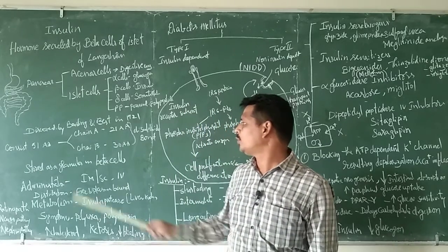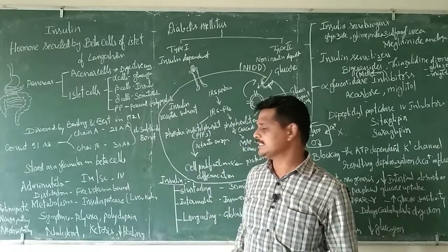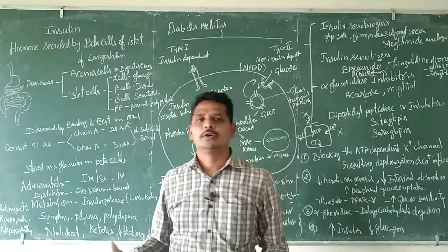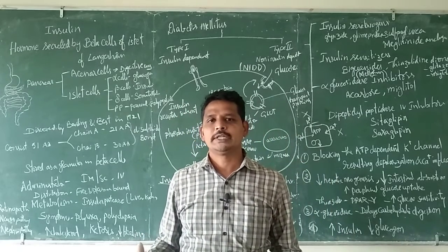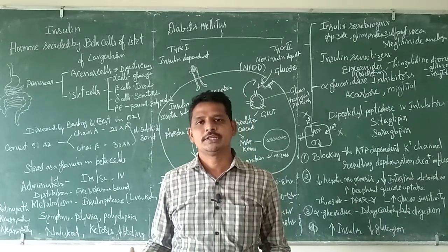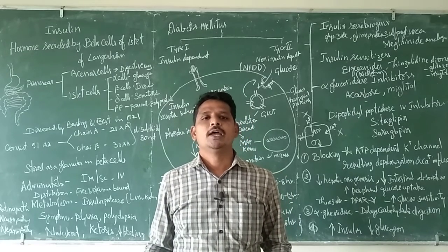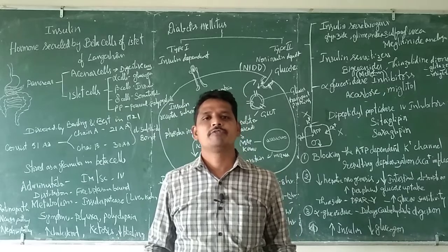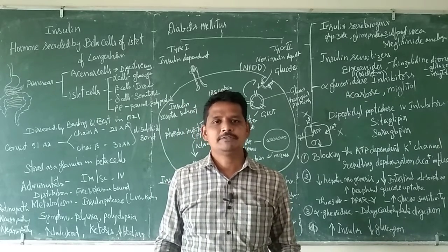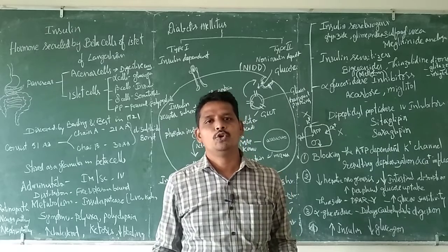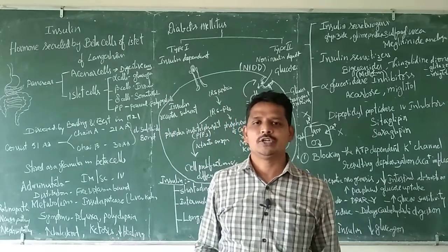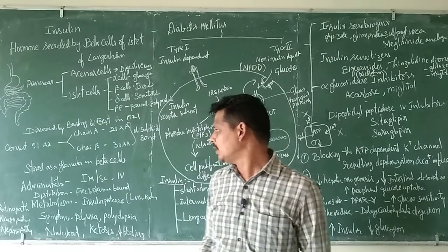Normally insulin is stored in the granules of the beta cells. This insulin was first taken from the cow, called bovine insulin, but because it caused anaphylactic shocks, we shifted to porcine insulin isolated from the pig. Due to socio-religious beliefs, we then shifted to human insulin called humulin, which is prepared by recombinant technology.